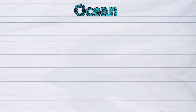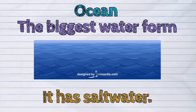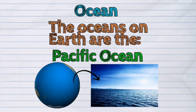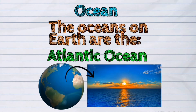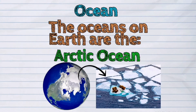The ocean is the biggest one. It has salt water. The oceans on Earth are the Pacific Ocean, the Indian Ocean, the Atlantic Ocean, the Southern Ocean, and the Arctic Ocean.